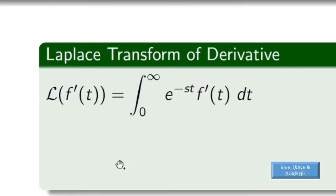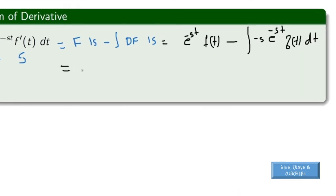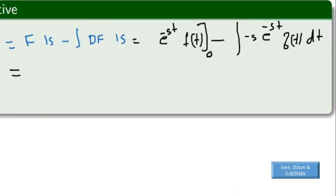Now consider the Laplace transform of a derivative f'(t). By definition, it is the integration from 0 to infinity of e^(−st) f'(t) dt. We can solve this using the product rule for integration, writing it as the first function times the integral of the second, minus the integral of the derivative of the first times the integral of the second. We get e^(−st) · f(t) with limits from 0 to infinity, minus the integral of (−s) e^(−st) f(t) dt.